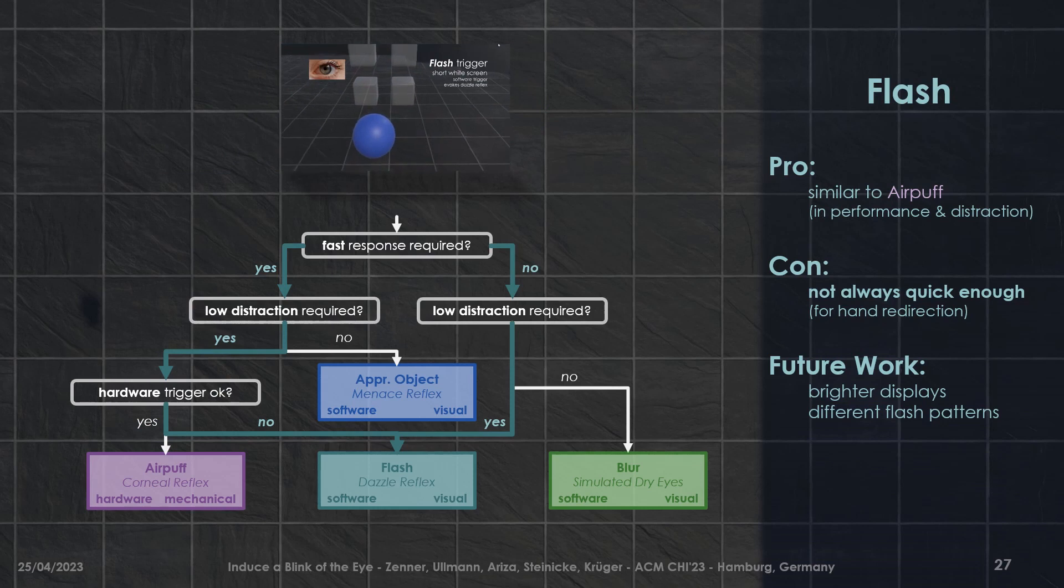As a software-based alternative, we identified the flash trigger, which was similar in performance and distraction to the AirPuff trigger, but not always quick enough to trigger blinks while reaching. To improve this trigger, different flash patterns and brighter displays should be tested.